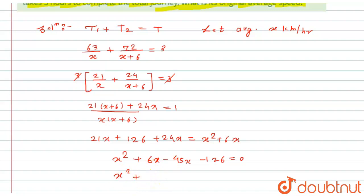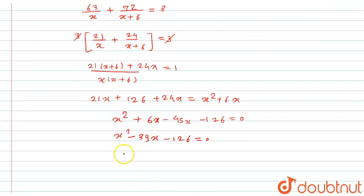Nothing but x squared minus 39x minus 126 equals 0. When you factorize this, you will get...